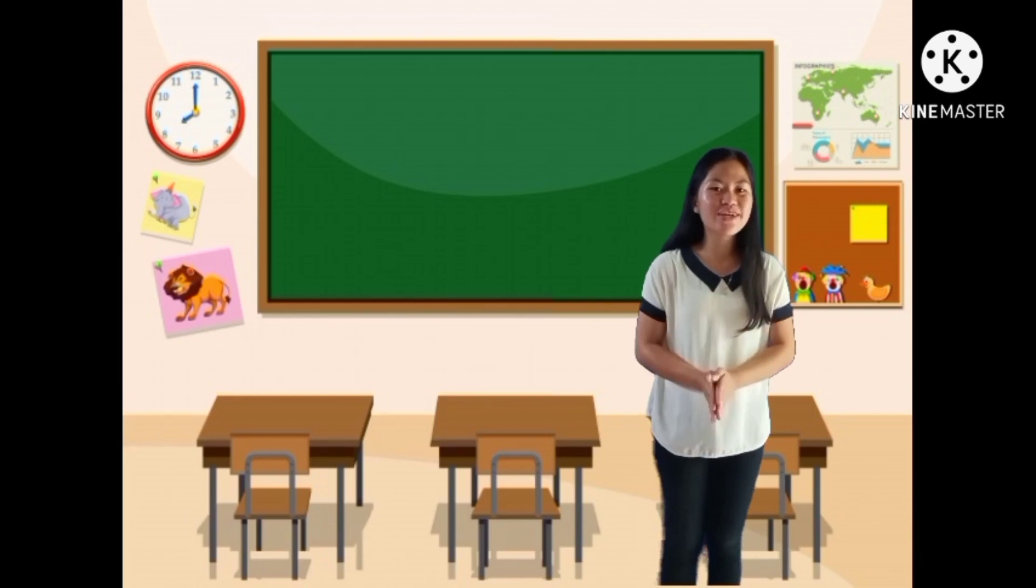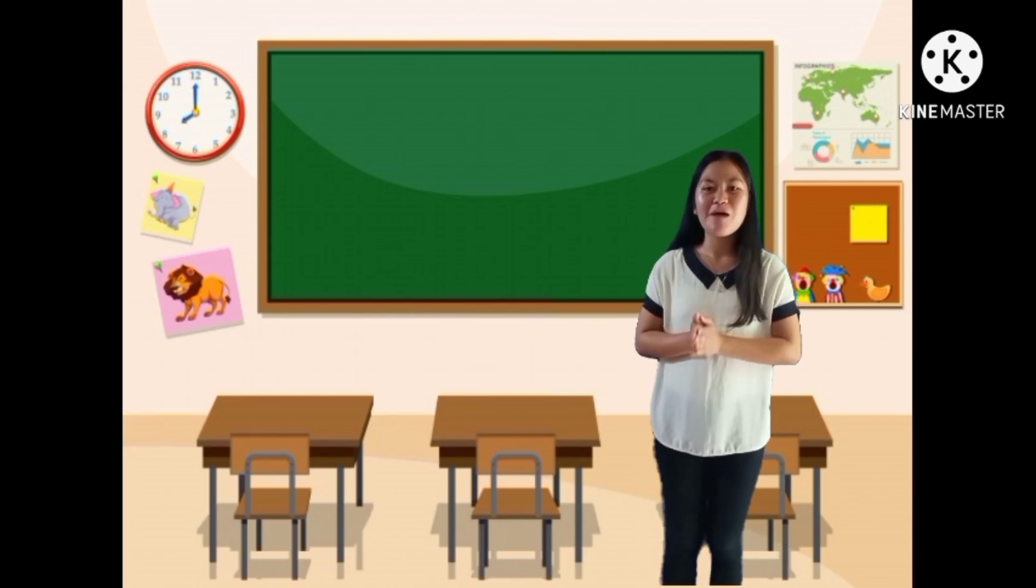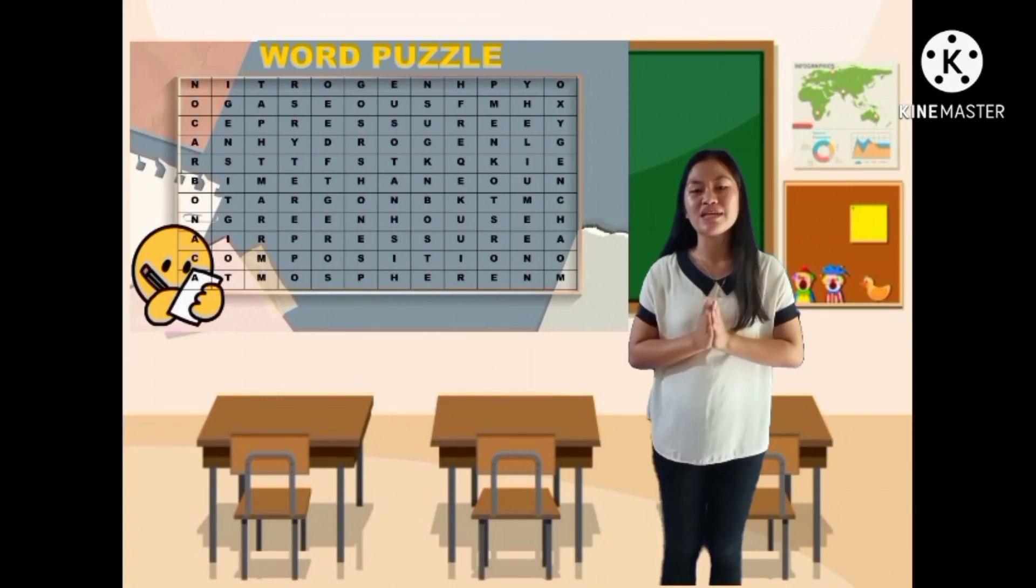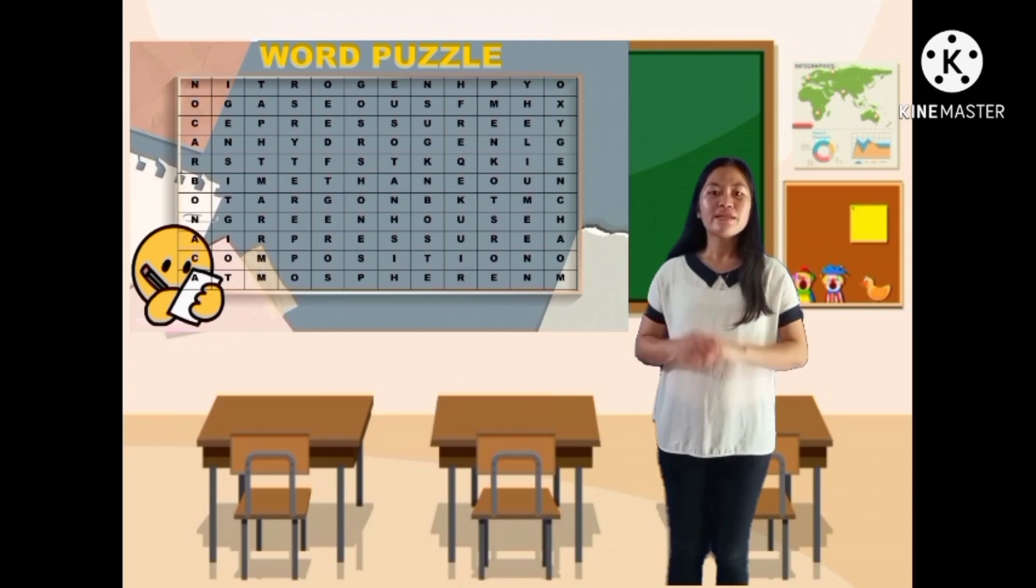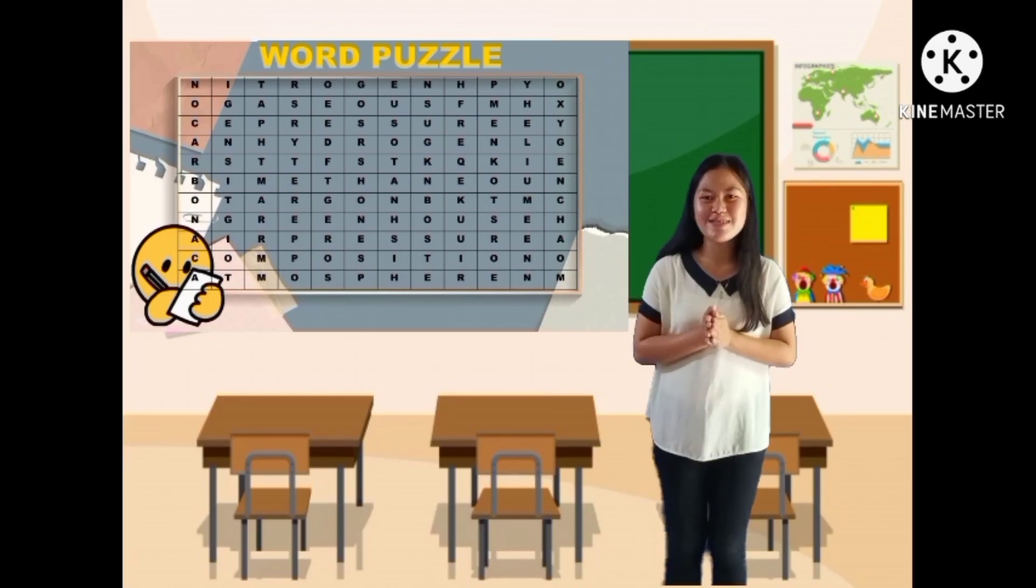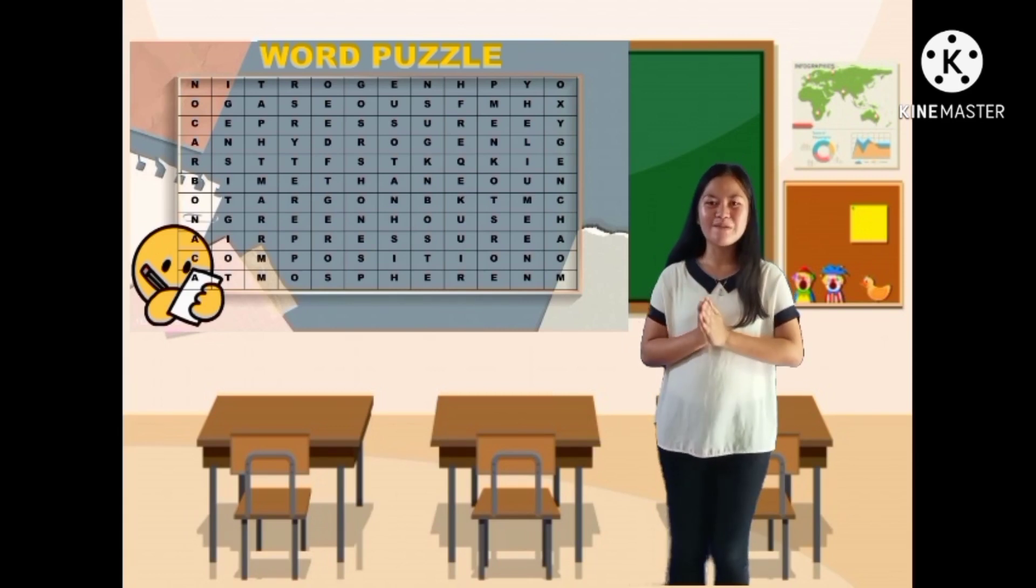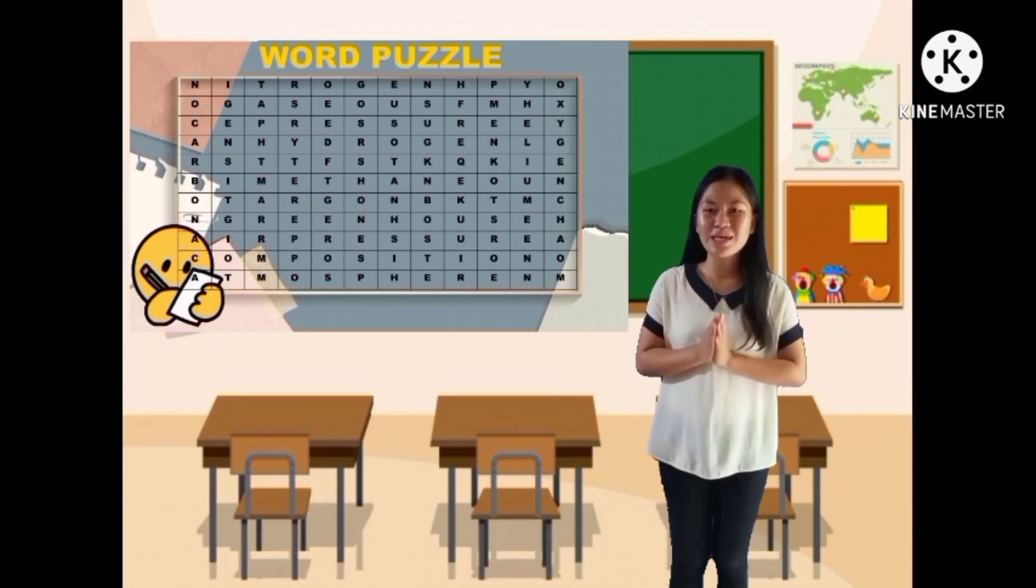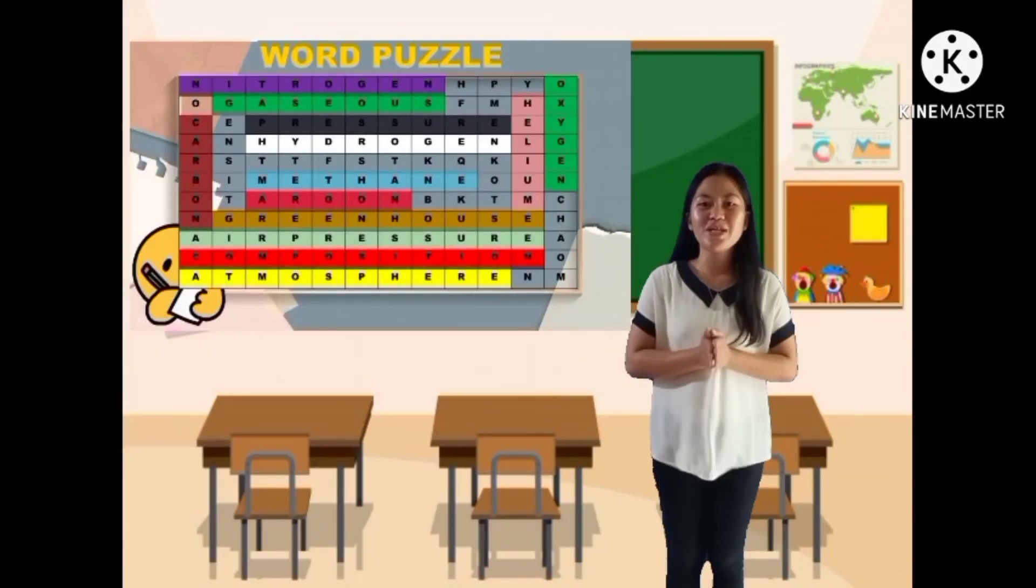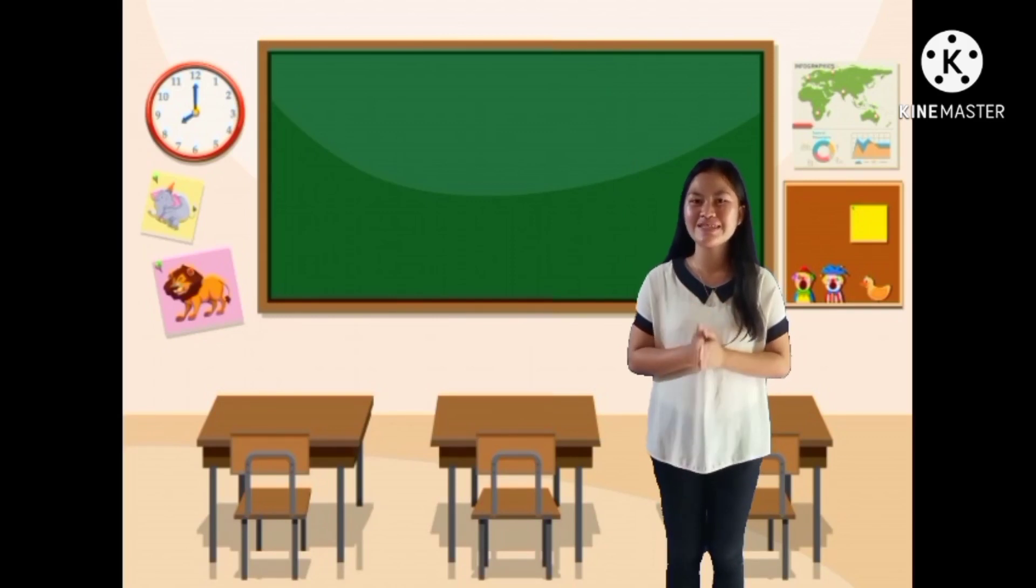But before we proceed to our next lesson, let's have an activity first. Our activity is a word puzzle. In this activity, you are going to find the correct words in the box about the composition of atmosphere that we've already tackled yesterday. Just encircle the correct words that you will find in the box. Let me see if you still remember our previous lesson yesterday. Are you done class? Very good! And now, let us check your word. Very good! All of you get the perfect scores.